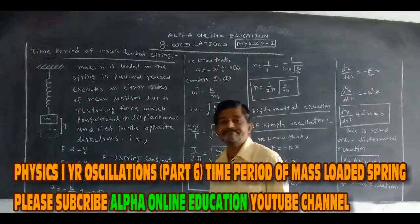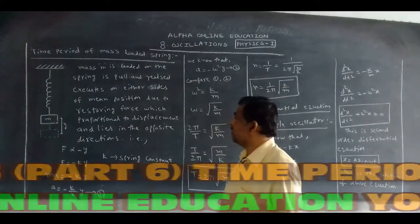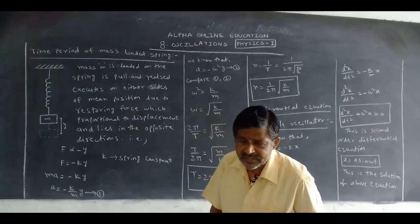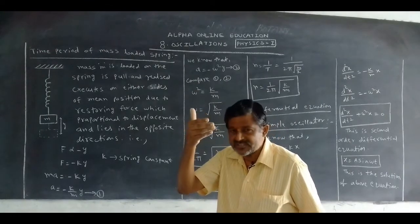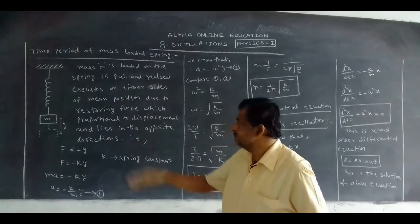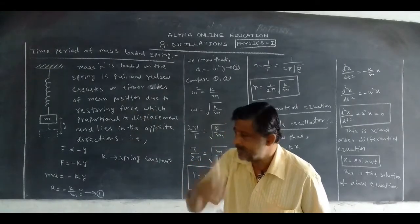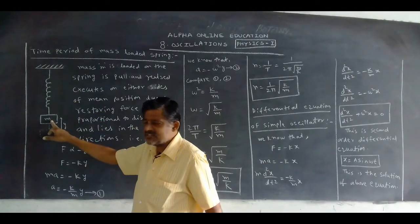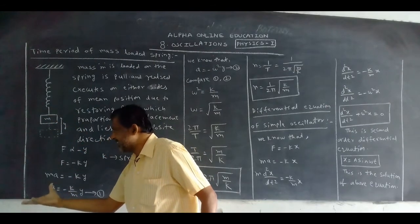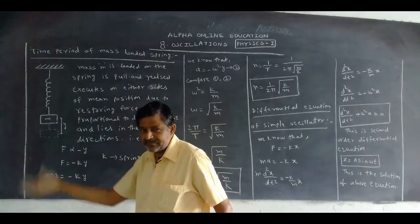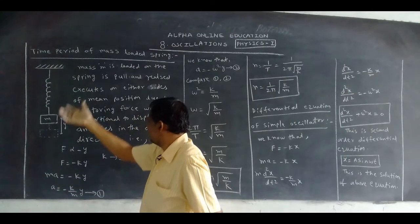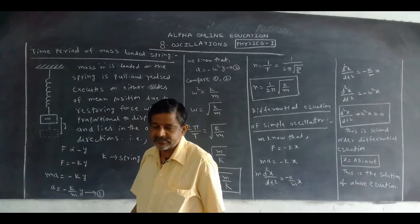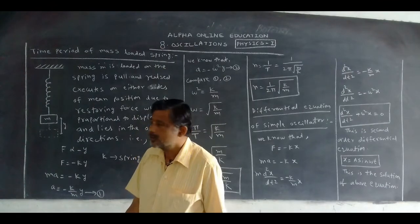The topic is time period of a mass-loaded spring. Time period means the time taken for one oscillation or one vibration. A mass-loaded spring makes vibrations — it moves from the mean position to the extreme position, oscillating on either side of the mean position.